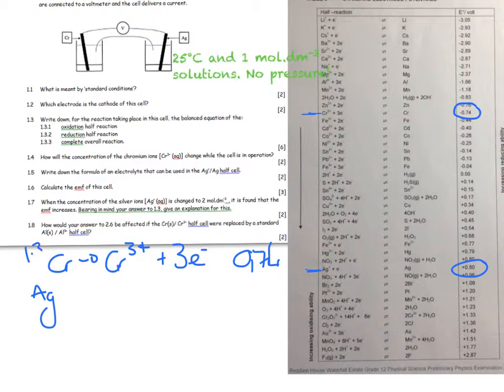So this is 1.3.1 then 1.3.2, and it's Ag⁺ plus an electron gives me Ag. It's really important that you have all the little charges and details. This one I've written forward so it's 0.80.